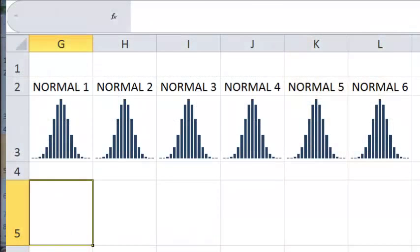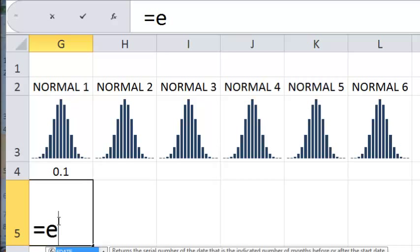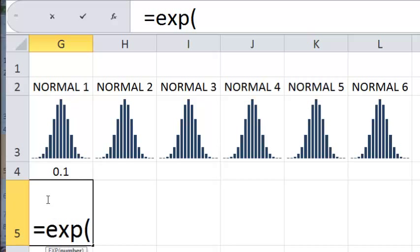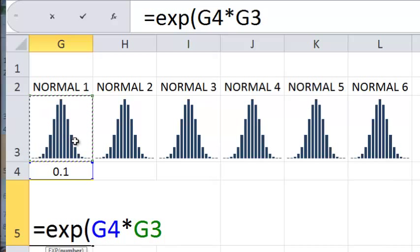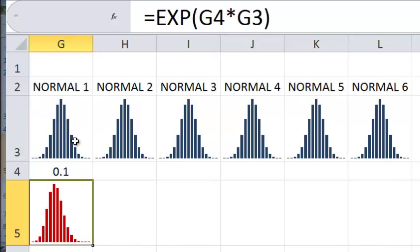You can even mix numbers and uncertainties together in the same expression. I'm going to start with a normal distribution this time. I'm putting 0.1 into G4. Then down here, I'm going to exponentiate that normal. Exp of that number times that distribution equals that distribution.